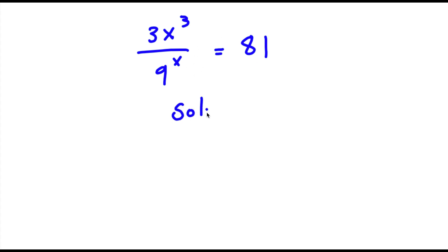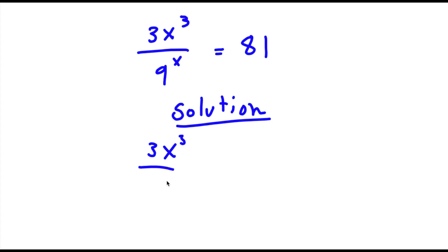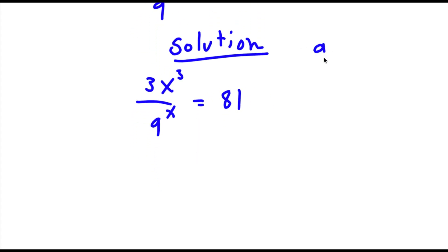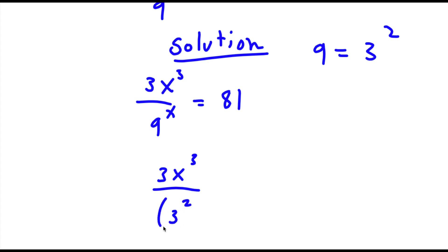For our solution, we start with 3x to the power of 3 over 9 to the power of x is equal to 81. Now, 9 here is the same thing as 3 to the power of 2. So if I substitute in 3 to the power of 2 for 9, I get 3x to the power of 3 over 3 to the power of 2 to the power of x, is equal to 81, which is equal to 3 to the power of 4.